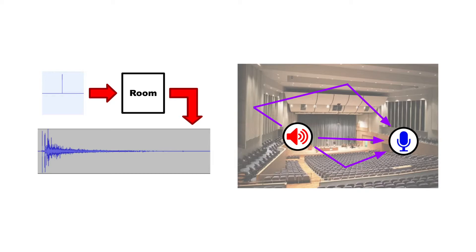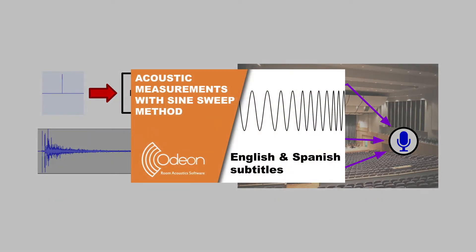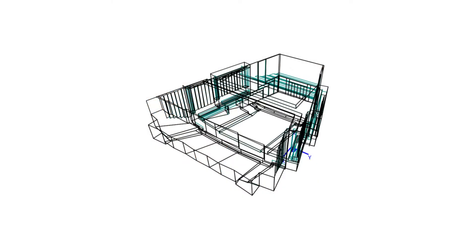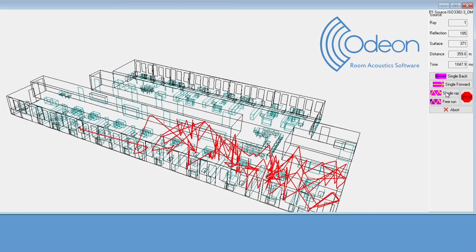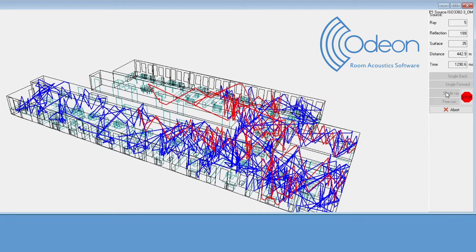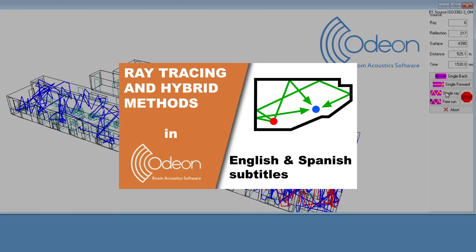The impulse response of a real room can be measured via different methods. We have a video explaining the sine sweep method, which is one of the currently preferred methods. For virtual rooms, the impulse response can be simulated using room acoustic simulation software. One such software is ODEON, which uses hybrid methods combining ray tracing and image sources. We also have a video describing these methods in more detail.